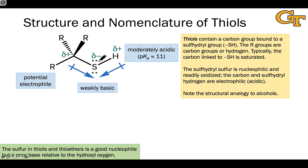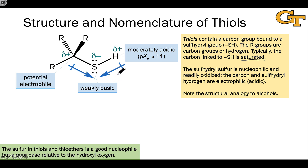The basic structure of a thiol is shown here, and it consists of a sulfhydryl or SH group linked to a carbon which is typically SP3 hybridized, or saturated, though not always. We do see analogs of phenols and enols, for example, that contain the sulfhydryl group linked to SP2 hybridized carbons.